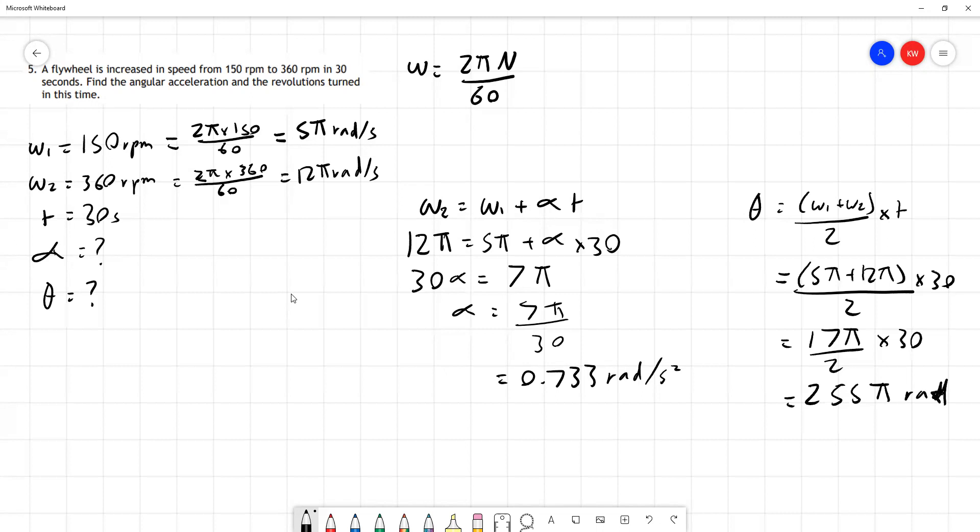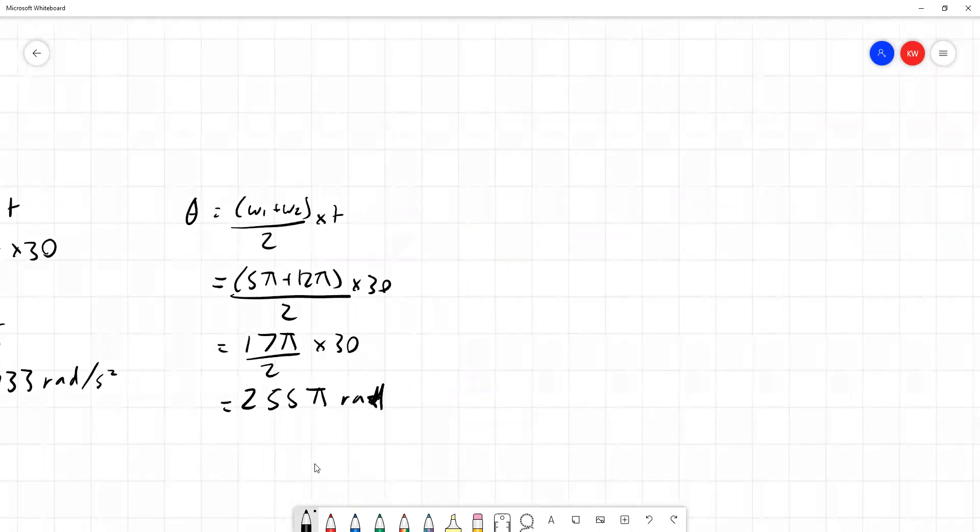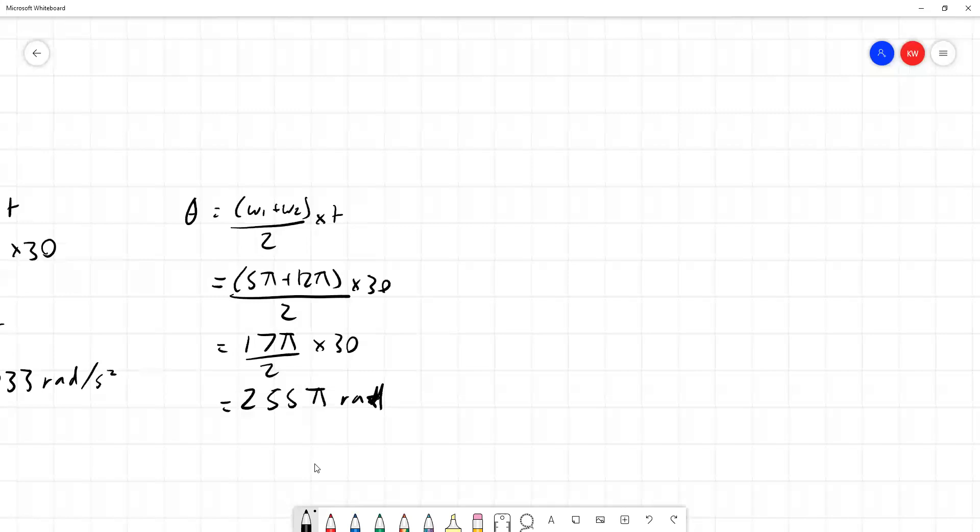You would be quite right if you're putting this into a calculator - you'd be getting 800-and-some radians. But since we're not giving our answer in radians, there's no reason for us to deal with the decimal places. We can leave it as 255 pi just now because what we'll be doing in our final step is converting this into revolutions.